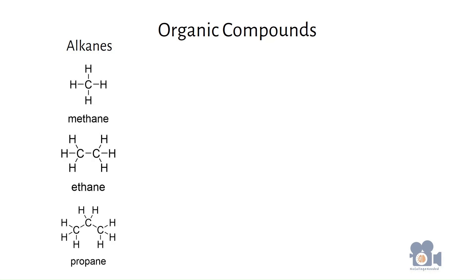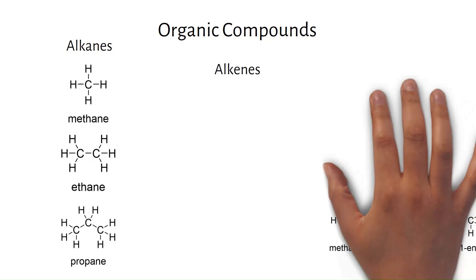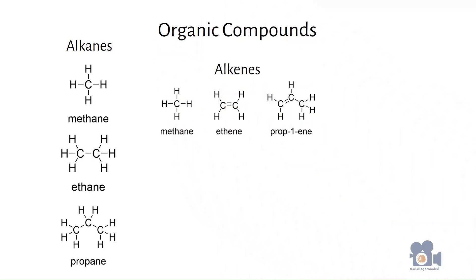The ending does change when you convert one of the single bonds in the alkanes to a double bond. These molecules are called alkenes. Notice that the A in the ending is changed to an E, but everything else stays the same.